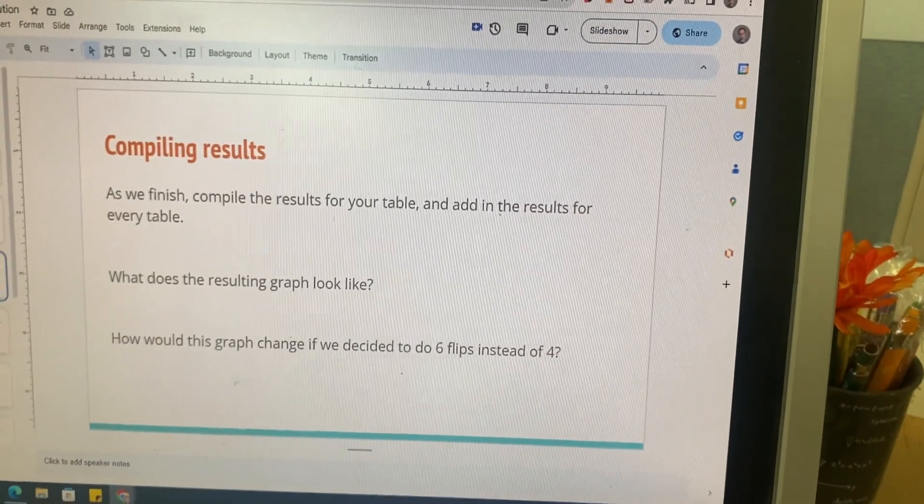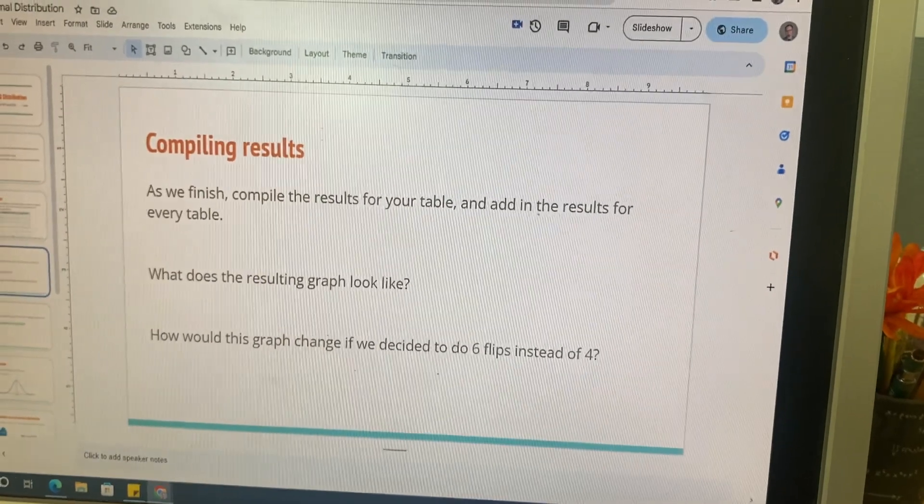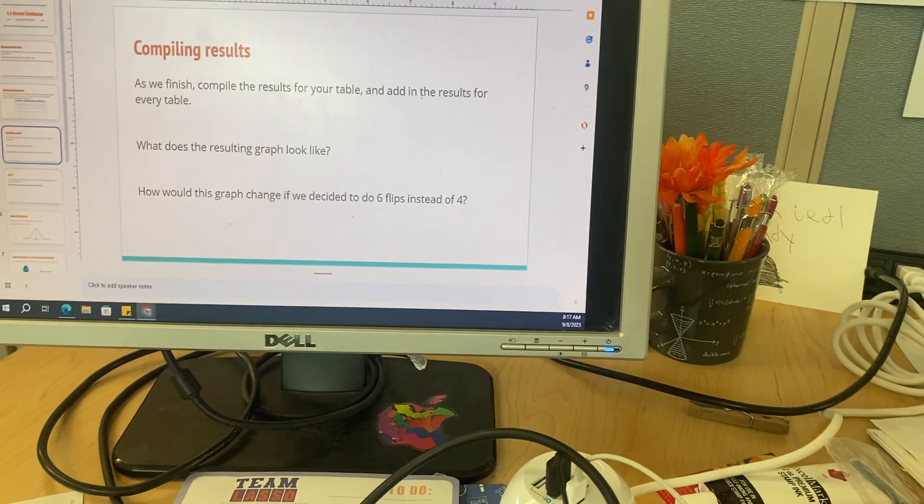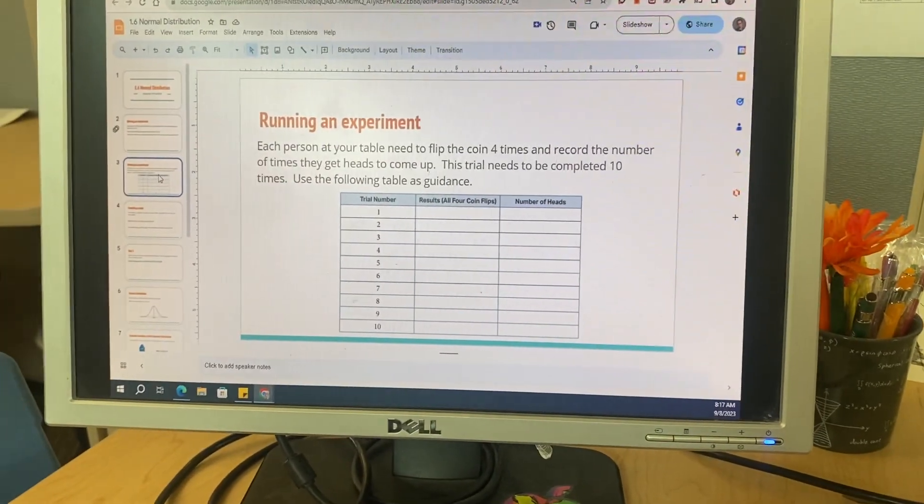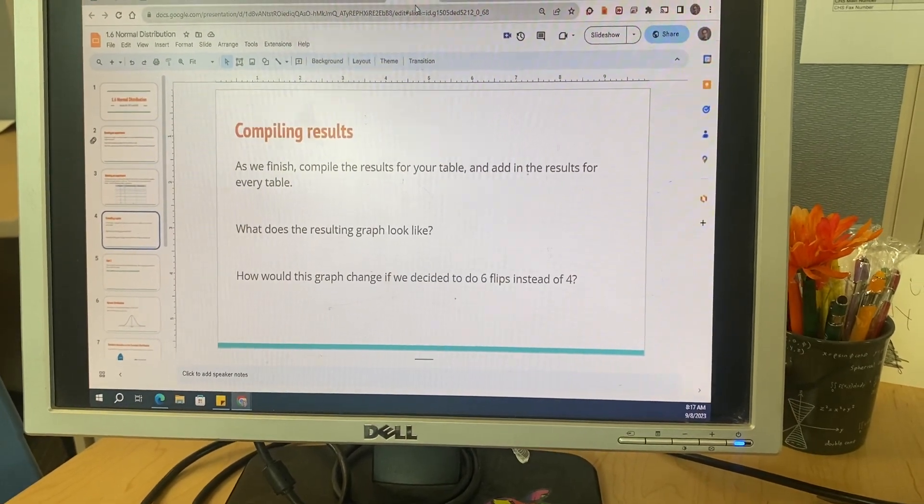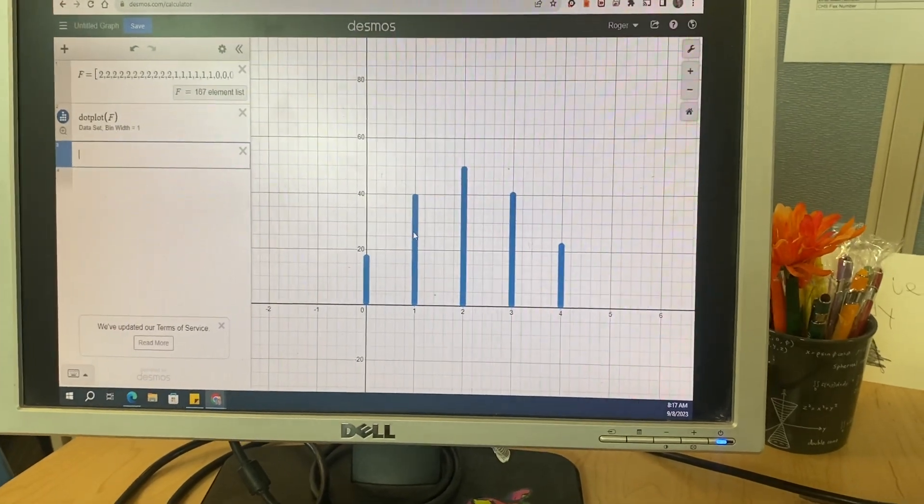All right, this is Mr. Wyrick. Going to go over a couple of things with you this morning to catch through the second half of the 1-6 notes. So yesterday, hopefully you were here, we did a whole bunch of coin flips, tracked the number of heads, compiled a bunch of results from classes, so hopefully you ended up with a graph that looked something like this.